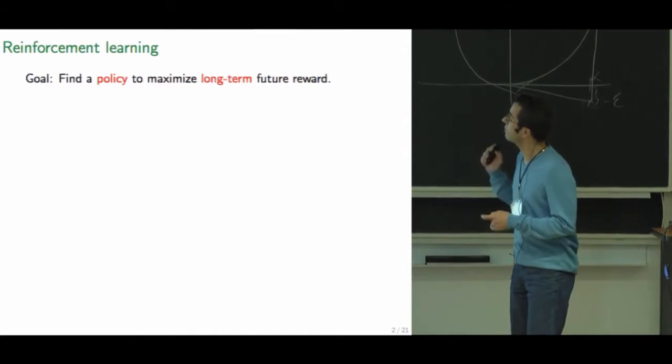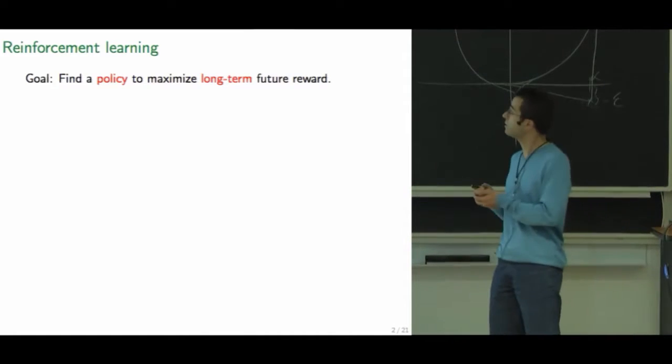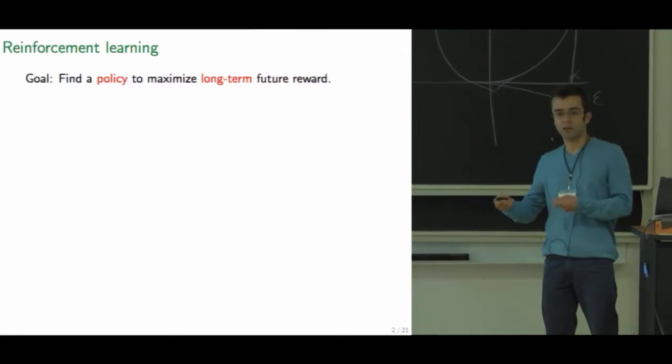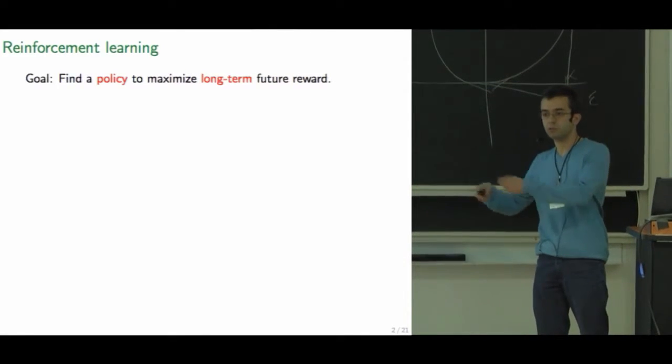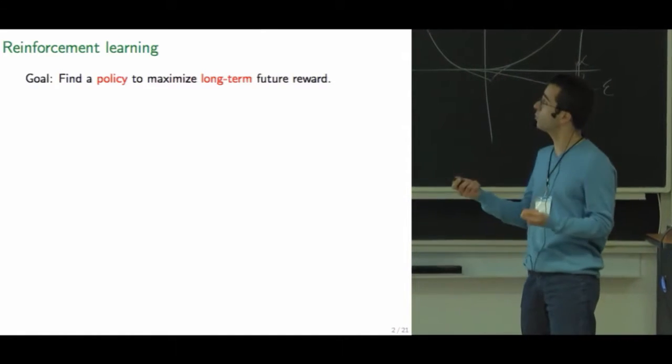Right. So our goal is to find a policy to maximize the long-term future reward that we collect in this MDP, where we observe some states, the agent takes an action, changes the state of the environment and observes a new state and some reward signal.